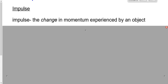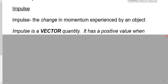Whether we're talking about the gain in momentum as an object speeds up, or the loss of momentum as an object slows down, the change in momentum is the impulse. Impulse, because it is dependent upon momentum, is a vector quantity. There is a direction associated with it, and it can be positive or negative due to that direction.